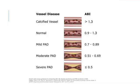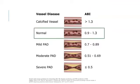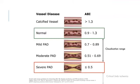Normally, the pressures in the foot should be equal to those in the arm, giving an ABI close to 1. An ABI below 0.9 indicates PAD, and patients often have claudication. An ABI below 0.5 indicates severe disease, and patients often have rest pain or tissue loss. In patients with suspected PAD with a normal or borderline ABI, a post-exercise ABI can unmask underlying disease.